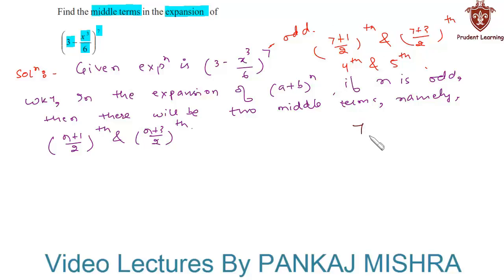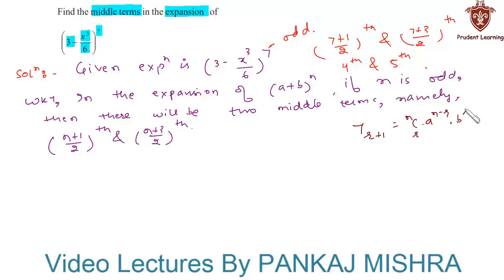Now let us find the 4th and 5th terms. We know that the general term of an expansion is given by T(r+1) = nCr into a raise to (n minus r) into b raise to r. Using this formula, we can find the values of the 4th and 5th terms.